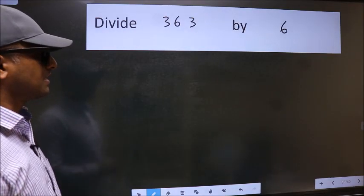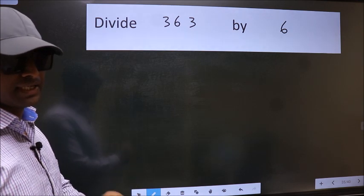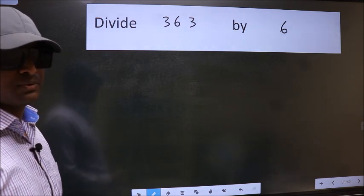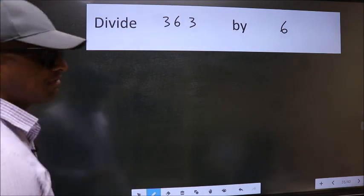Divide 363 by 6. While doing this division, many do this mistake. What is the mistake that they do? I will let you know. But before that, we should frame it in this way. Okay.